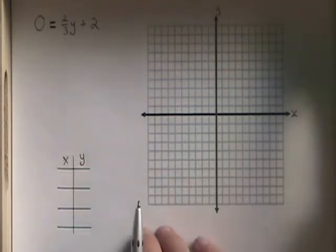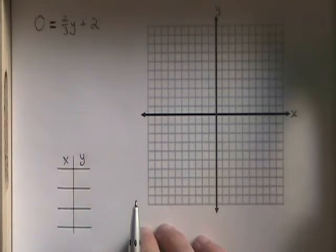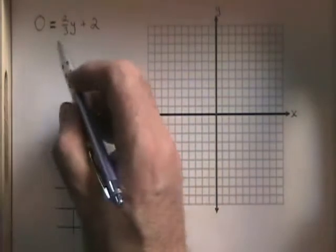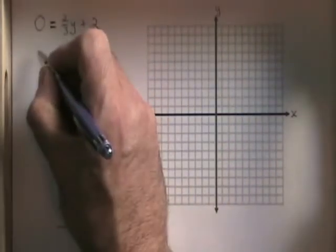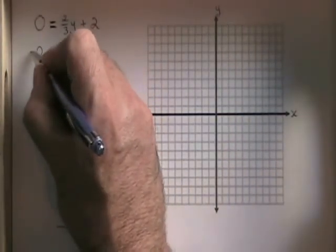In this equation, we have 0 equals two thirds y plus 2. Let's isolate the y. If I move the 2 to the other side of the equals, it becomes negative 2.